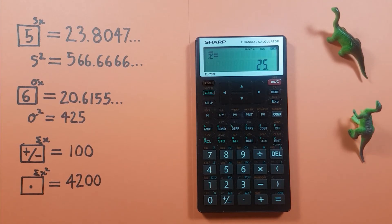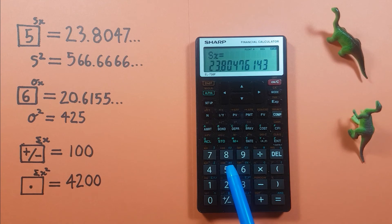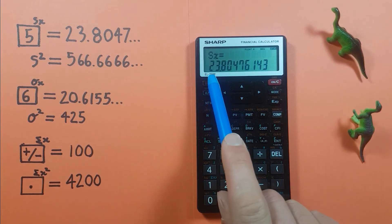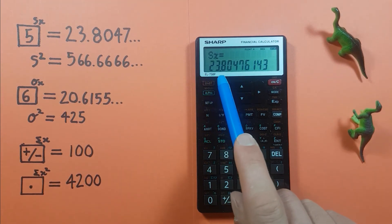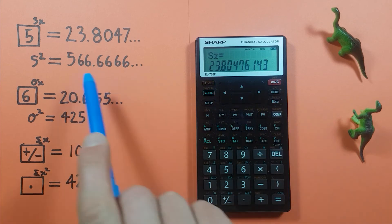Next up we can find our sample standard deviation or large sigma x by going recall 5 and here we see we get a sample standard deviation of 23.8047 etc which yeah that's correct.